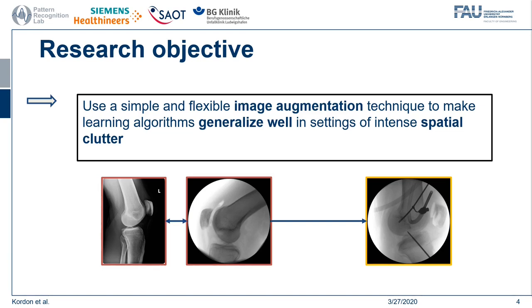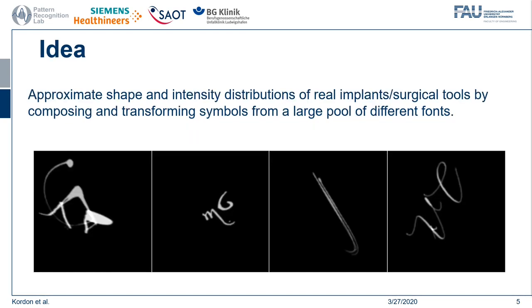We also wanted to be independent of any solution tailored to a particular set of objects. What we came up with was a very simple but intuitive idea based on using various letters and symbols from different open-source fonts. There is a vast amount of fonts out there which come in numerous shapes and forms, and what we wanted to do is to approximate the real object shape and intensity distribution by sampling symbols from them and composing them in a smart way. Here you can see some examples of these font compositions at the bottom of the slide, and you immediately see that you get a diverse shape impression.